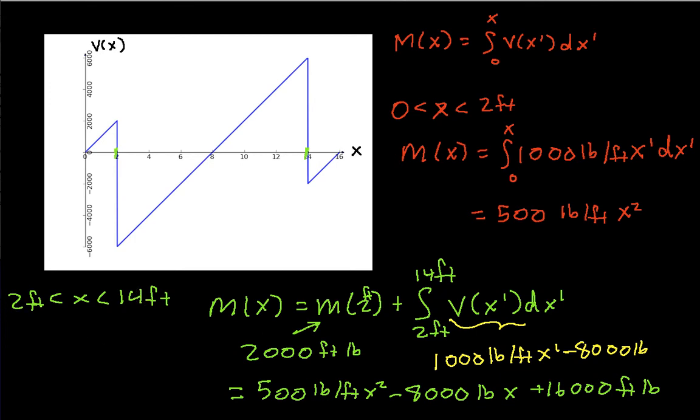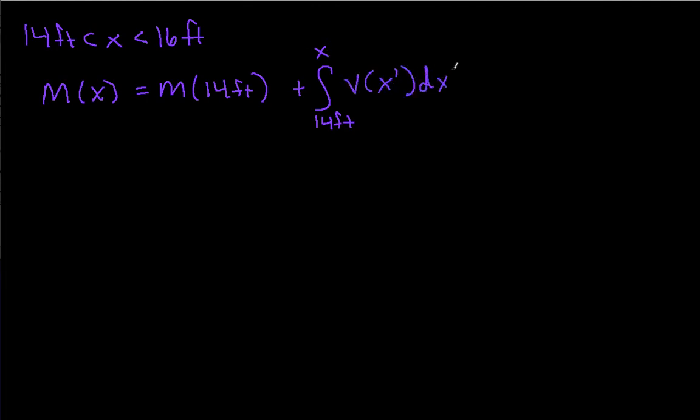The last thing to do is find mx between 14 feet and 16 feet. So in this region, we'll have mx is equal to m of 14 feet plus the integral from 14 feet to x of v of x prime dx prime. m of 14 feet is 2,000 foot pounds.